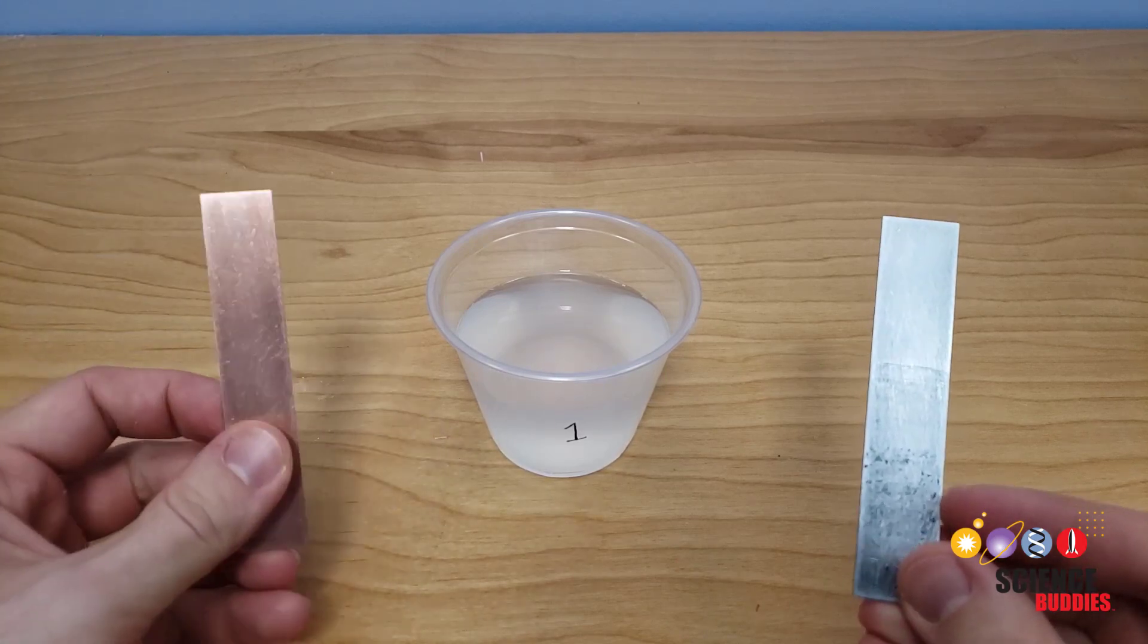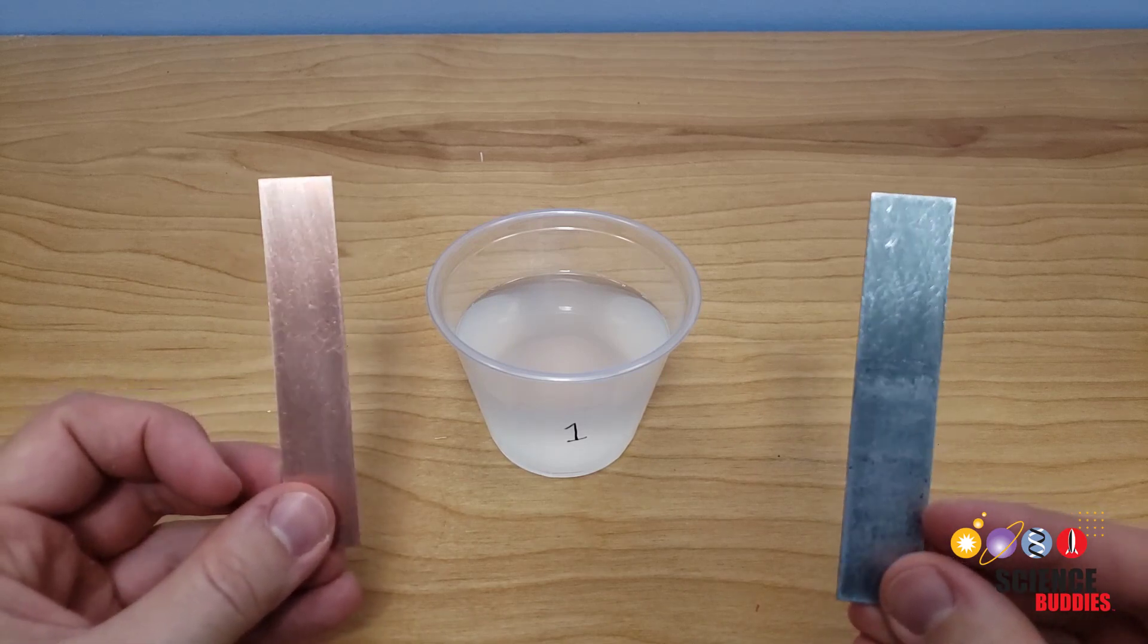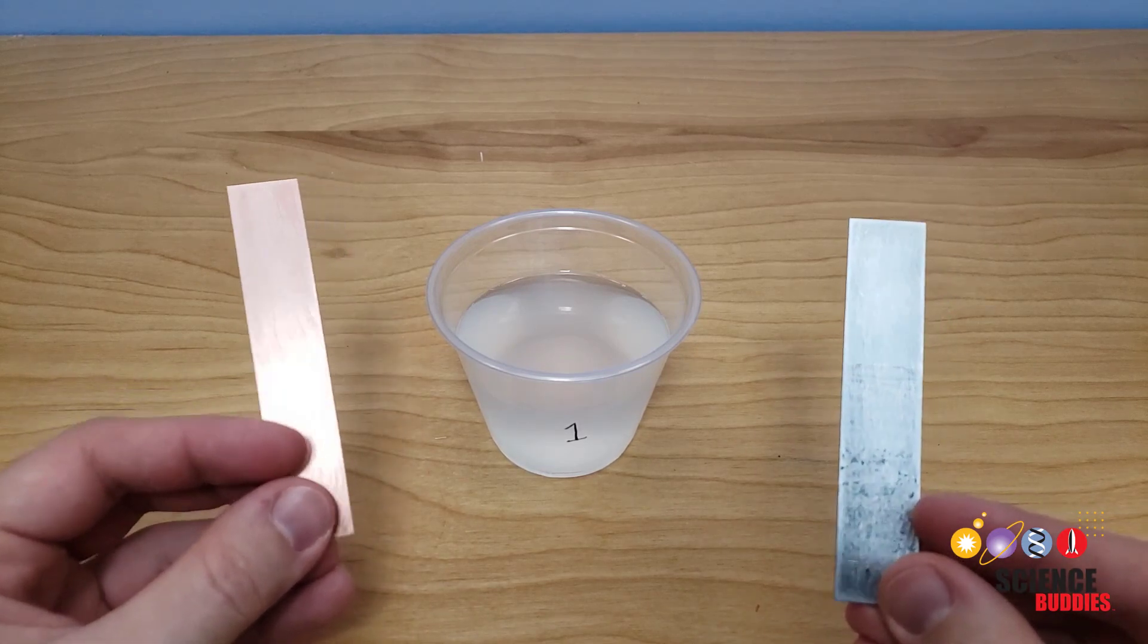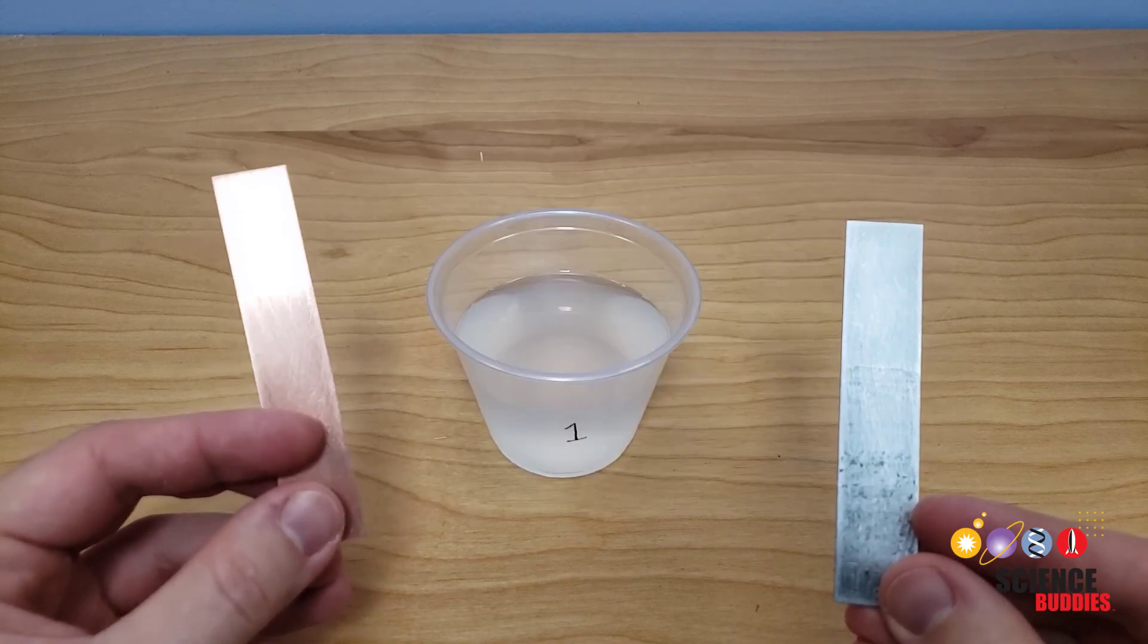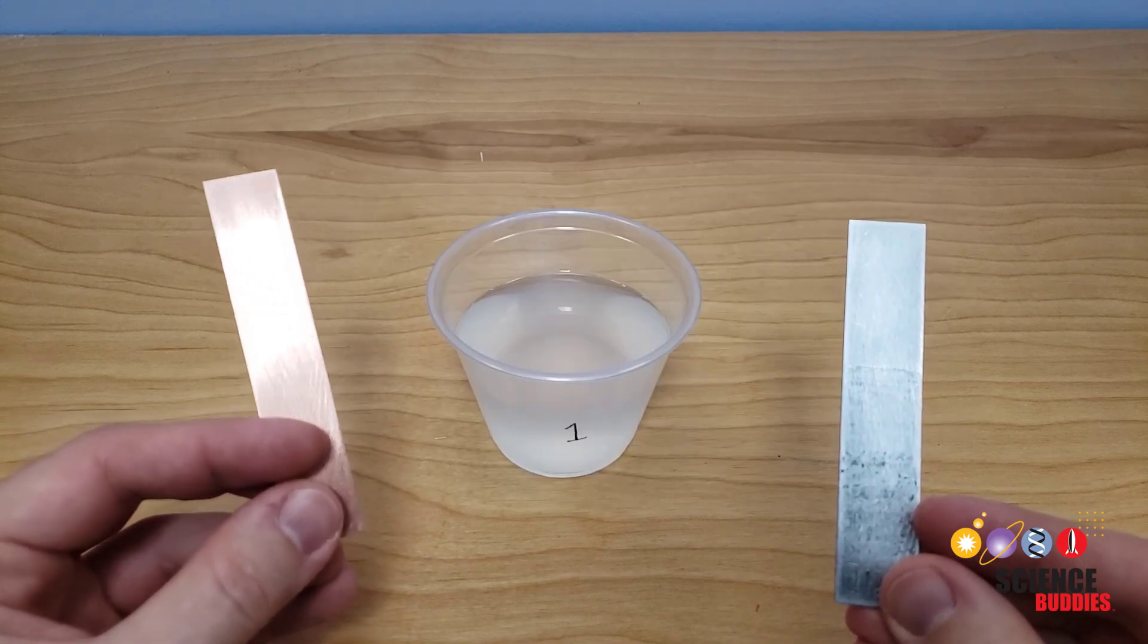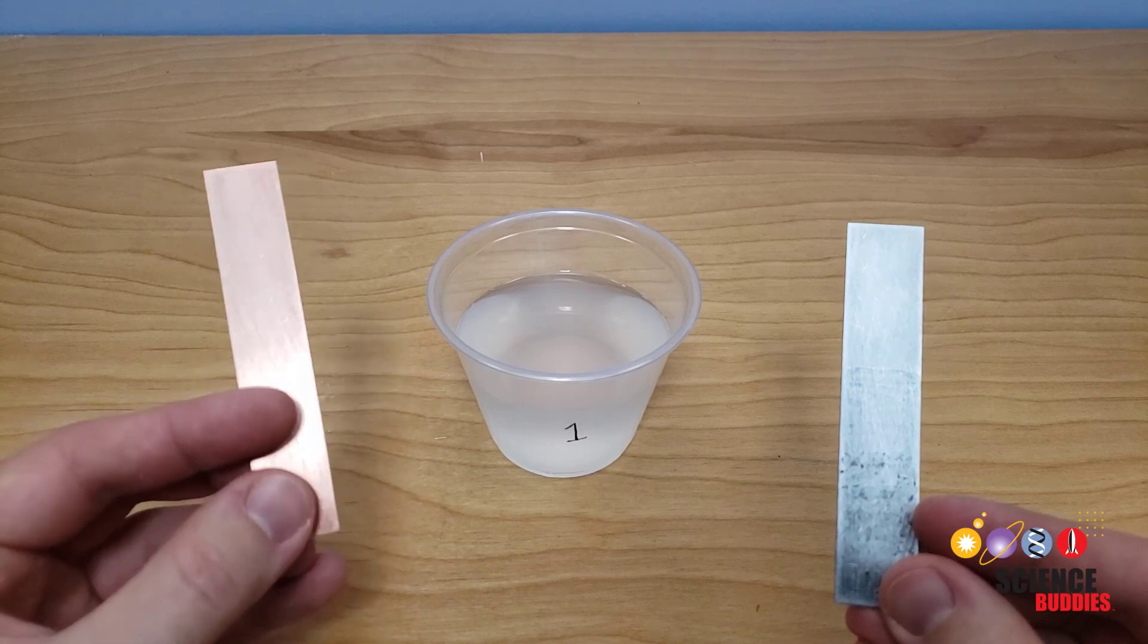You may notice that these electrodes have some corrosion on them and that's because I've used them for previous projects. If you use these electrodes for something else like our potato battery project, you can clean them by first soaking them in a mixture of vinegar and salt and then scrubbing them with sandpaper.